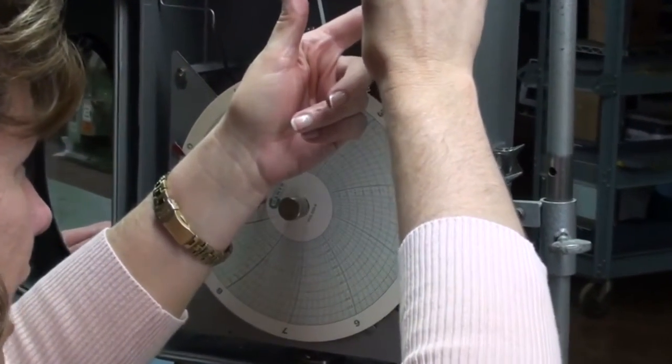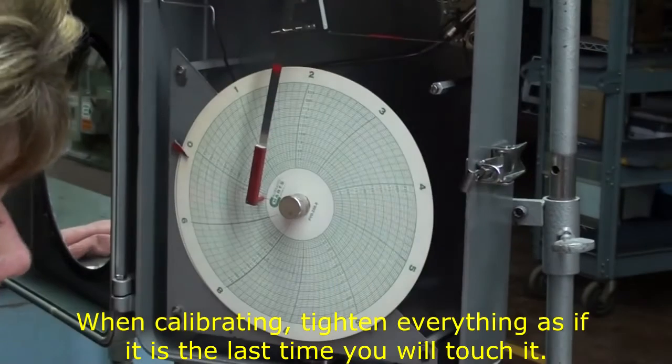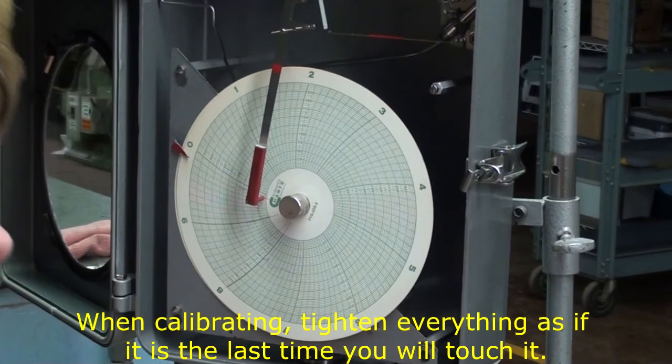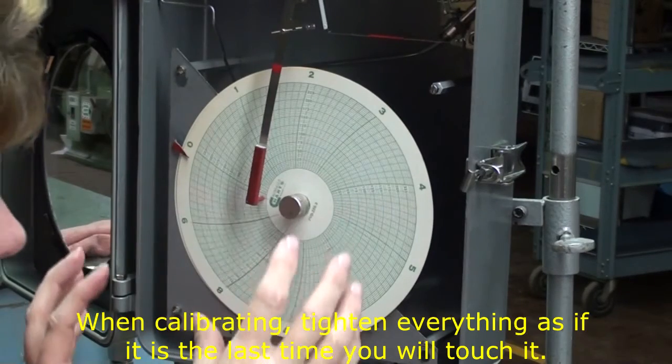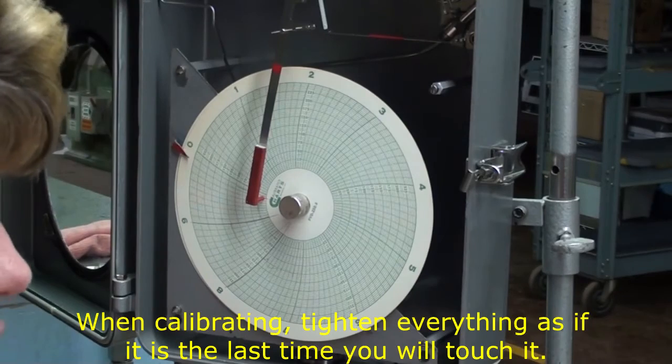And any time you're calibrating a recorder, you really should tighten everything as if it's the last time you will need to. Because if by chance, I get lucky and hit the calibration with the first adjustment, if I go back and tighten anything, then I've messed up my calibration. So anything that you're tightening up on a box, you should tighten it as if it's the last time you're ever going to touch it.